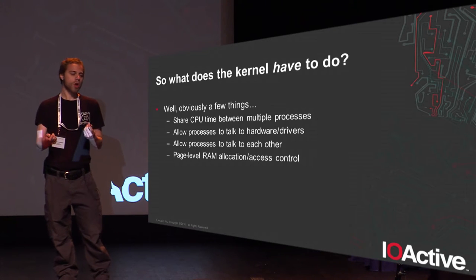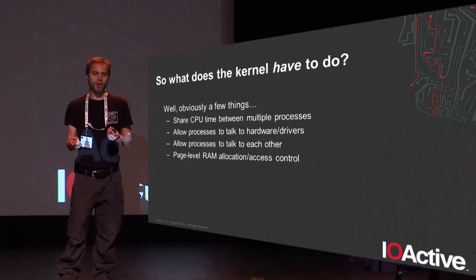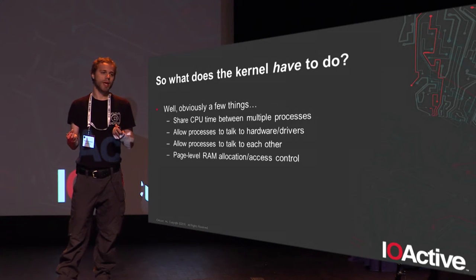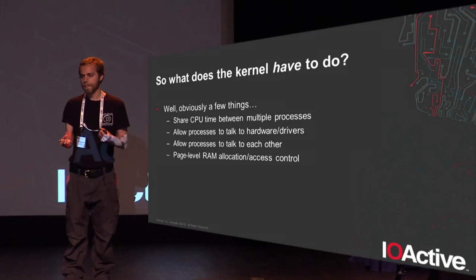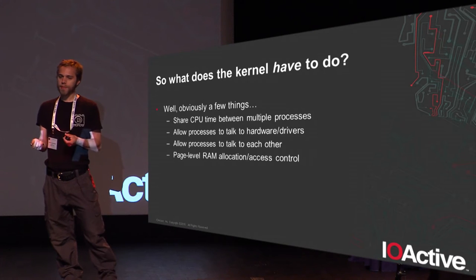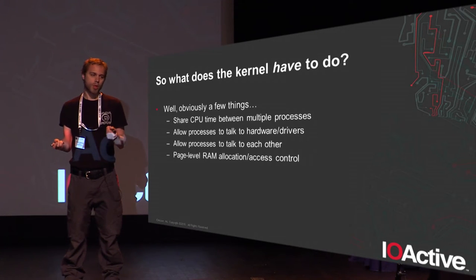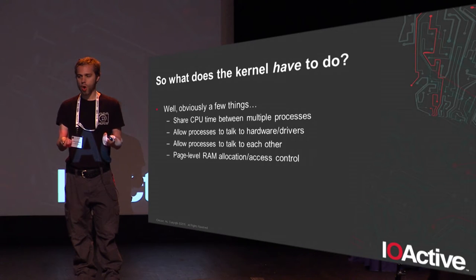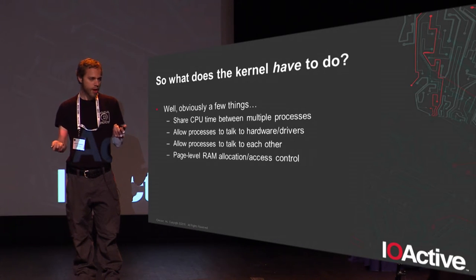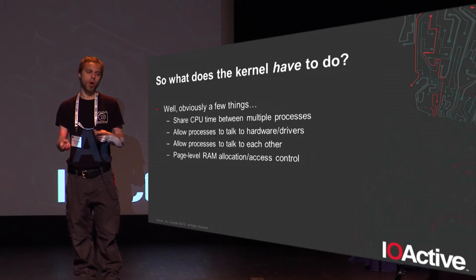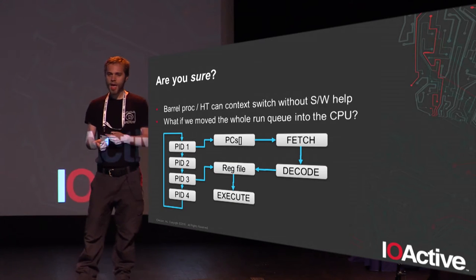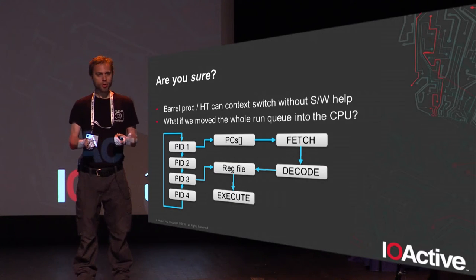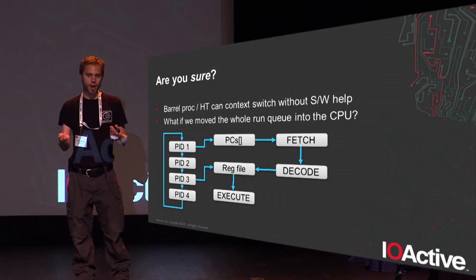I started thinking: what does the kernel actually have to do? What are the things we cannot avoid doing outside of the user space process? As far as I could tell, this was: we have to be able to timeshare the CPU between processes — we can't do that in the context of one process. We have to provide processes with some interface to talk to each other, to hardware, and to drivers. And we need to manage memory at the page level — everything below page level can be done in libc, just like on Linux.